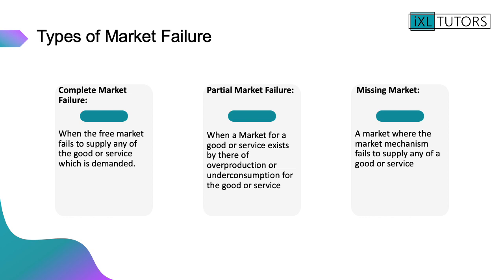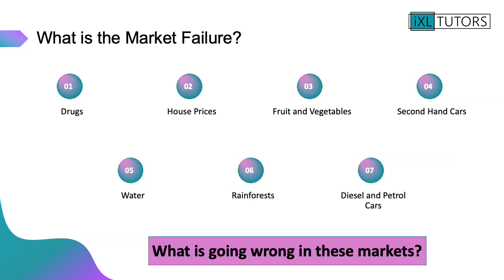In complete market failure we also have what's called a missing market — a market where the market mechanism fails to supply any of the good or service. There are seven examples on screen for you. What I'd like you to do is write down what you think is wrong in each of these markets — what is the market failure? You've got drugs, house prices, fruit and vegetables, second-hand cars, water (meaning water coming to households from your taps rather than bottled water), rainforests, and diesel and petrol cars. Pause the video — this should take you about 10 minutes.